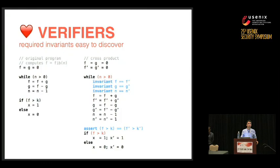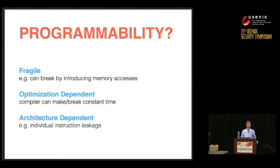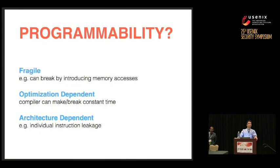Q&A: A follow-up question asks whether, given that writing constant-time code is extremely hard, one could automatically generate a constant-time program that is functionally equivalent to a given non-constant-time input. The speaker notes difficulty understanding the question and suggests taking it offline.